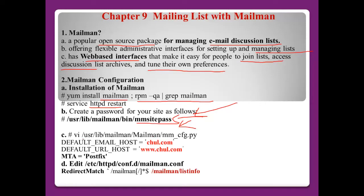Next, open the file /usr/lib/mailman/Mailman/mm_cfg.py. This is a Python file. Check three lines: first, 'DEFAULT_EMAIL_HOST' — in my case 'chol.com'; second, 'DEFAULT_URL_HOST' — in my case 'www.chol.com'. To configure these, check that your name server supports this domain, and the MTA must be Postfix, not Sendmail.